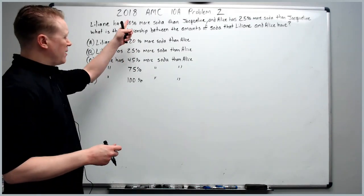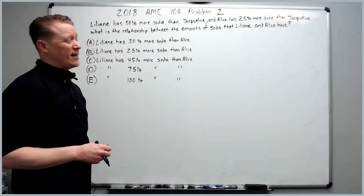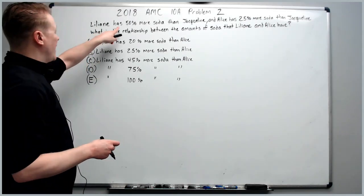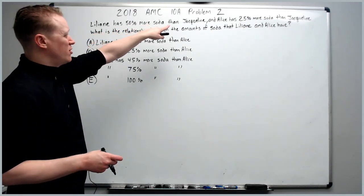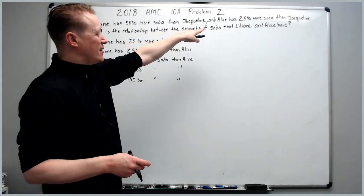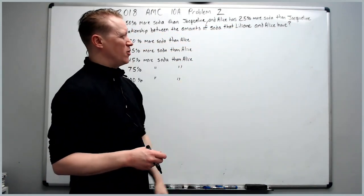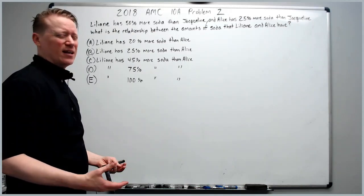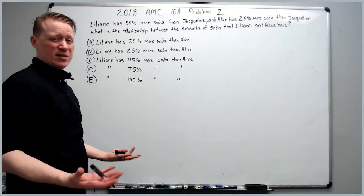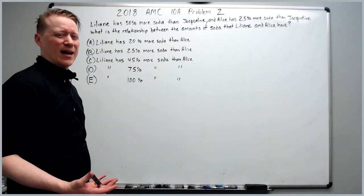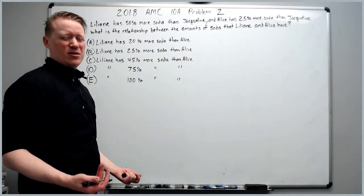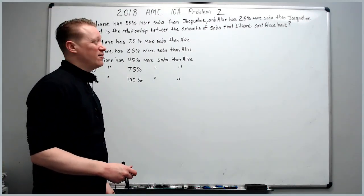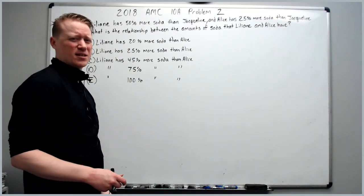And on to problem number two from the 2018 10A. Lillianne has 50% more soda than Jacqueline, and Alice has 25% more soda than Jacqueline. Pause there and try to make sense of it. You could use variables because we don't know how much soda Jacqueline has. But what's a nice number that you can take 25% of, but you can also take 50% of?